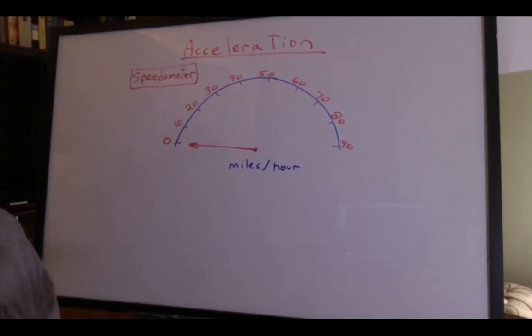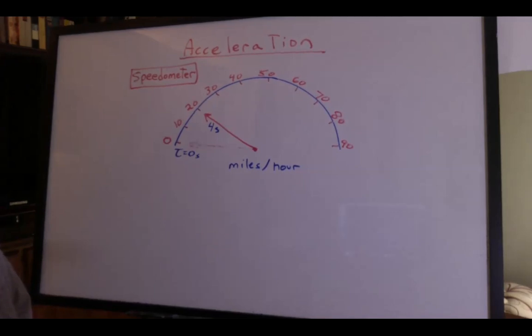Let's say we're at a red light and it turns green. At time zero, we're going zero miles an hour. You step on the gas, and in four seconds, you're doing 20 miles an hour, and you're still going faster.